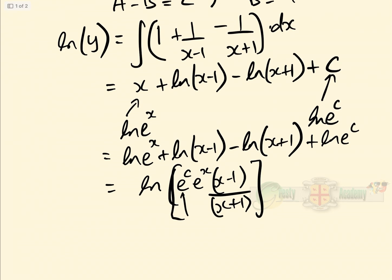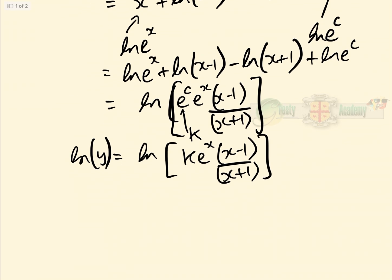As e^c is just a constant, we could replace that by K, for example. So that equals log[K · e^x · (x - 1)/(x + 1)], and that equals log(y). Therefore, we have that y = K · e^x · (x - 1)/(x + 1) as the general solution to our differential equation, as required.